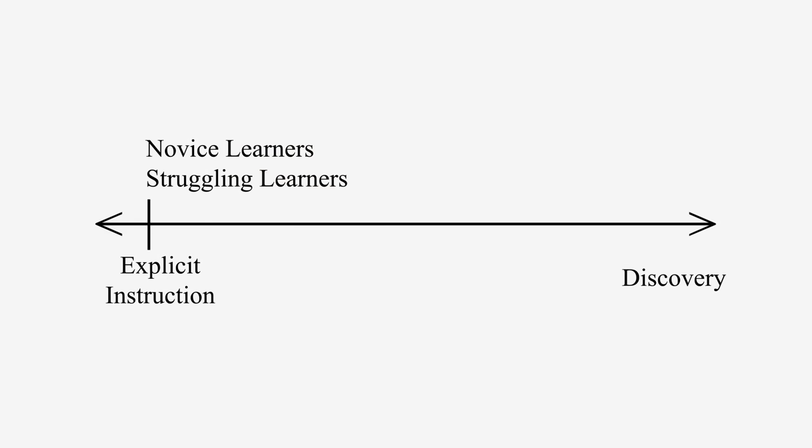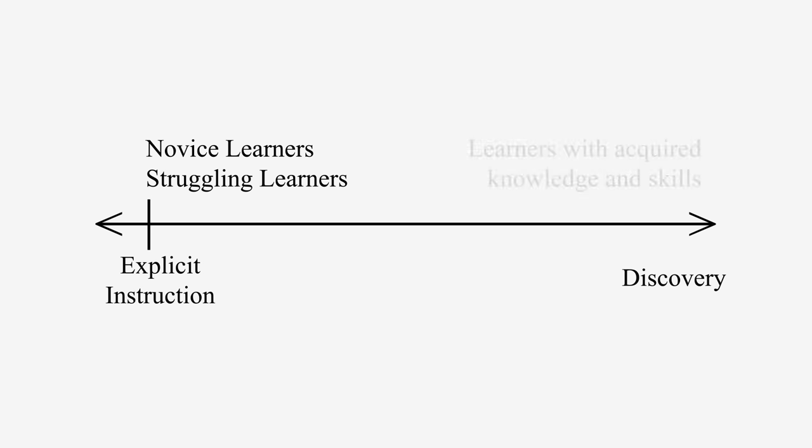So those two things — when the student is a novice and when the knowledge is new — explicit instruction would be desirable. But then after you've gained lots of information and lots of skills, discovery becomes much more a viable option, but only after you've had explicit instruction.